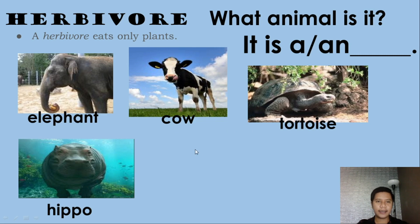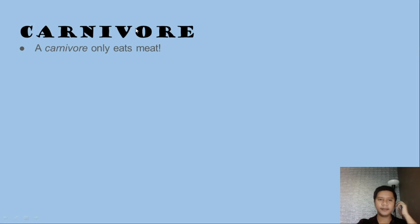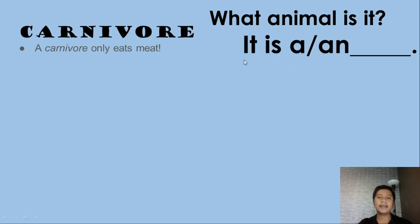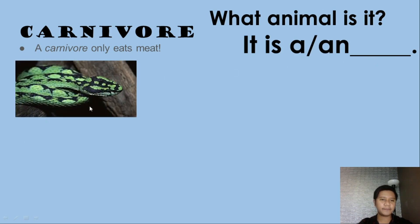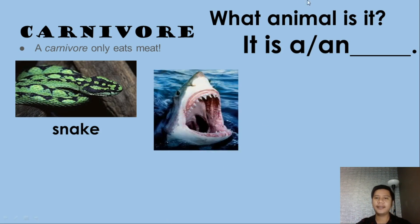Now for carnivores — a carnivore only eats meat. Here's the sentence structure: 'What animal is it? It is a/an [blank].' What animal is it? It is a snake. A snake is an example of a carnivore because it eats other animals, like rats and birds.